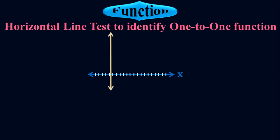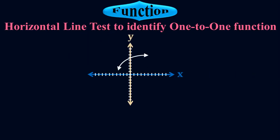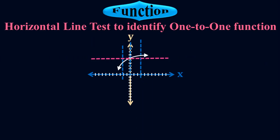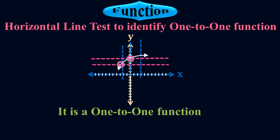One more function where its graph is in this shape. First, check whether it is a function — apply the vertical lines. All the vertical lines pass through single points, so it's a function. Now to check whether it is one-to-one, I apply the horizontal line test. Both horizontal lines touch the graph only once, so it satisfies the horizontal line test. Therefore it is a one-to-one function.